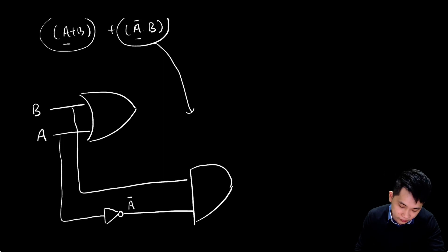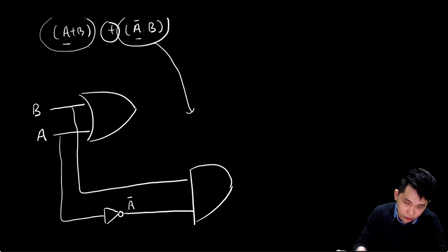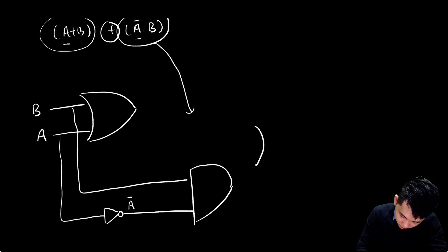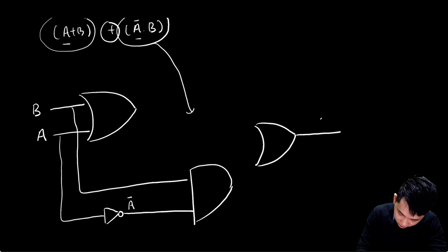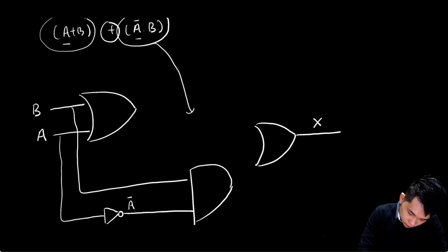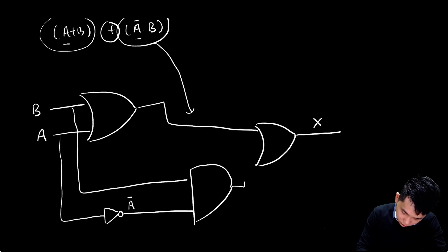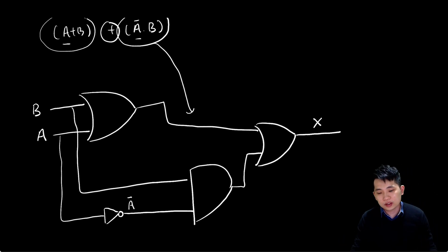Finally, I combine both terms together with the + operator, so I draw a final OR gate here. The output is labeled x. Then I join all the lines together, and there you go — this is how you construct a logic circuit from a problem statement.